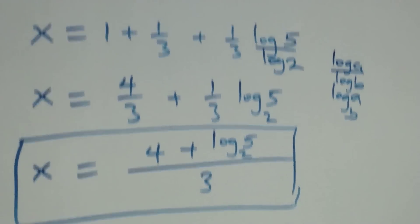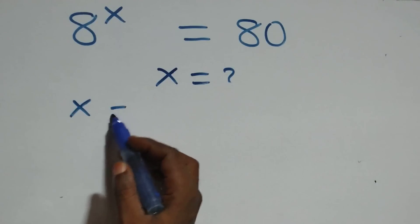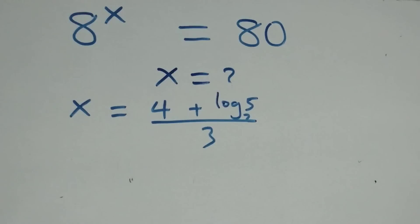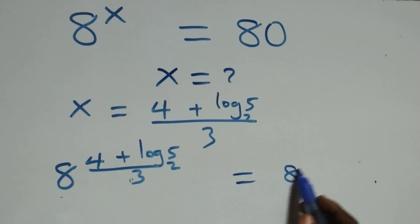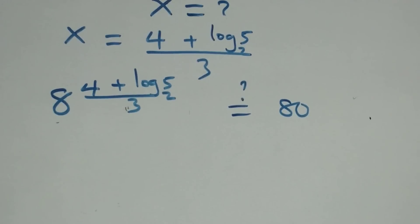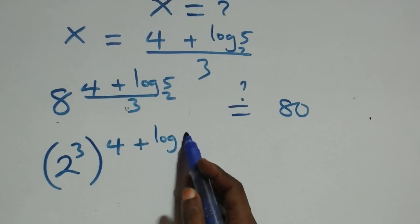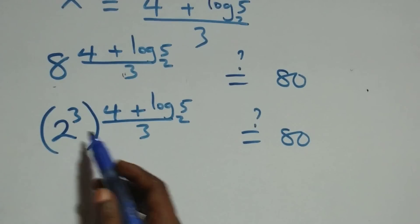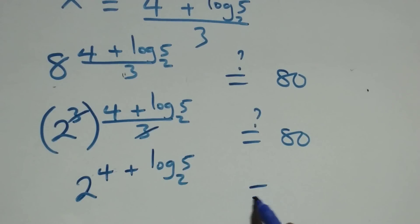Let's verify this answer. We substitute x equals (4 + log₂5) over 3 back into the original equation, giving 8 raised to the power (4 + log₂5)/3 equals 80. Expressing 8 as 2³, we get 2³ raised to the power (4 + log₂5)/3, which simplifies to 2 raised to the power (4 + log₂5).